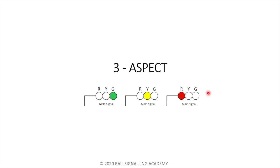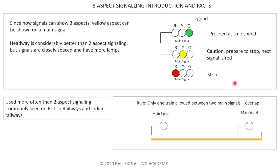If you understood two aspect signaling, three aspect should be easier — two aspect is actually the more complicated one. The rules for three aspect: since signals can now show green, red, and yellow on the same signal, we no longer need a separate distance signal type. Green means proceed at line speed. Yellow means caution — prepare to stop, next signal is red. Red means stop. The same rule applies: one train between two main signals plus overlap. Three aspect is commonly seen on British Railways and Indian Railways.